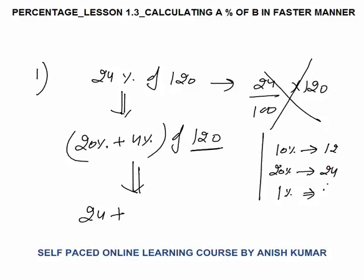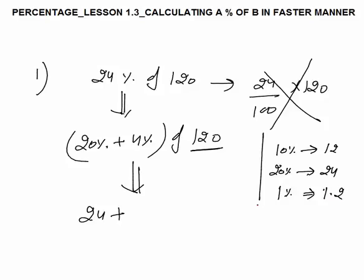So 20 percent of 120 will be double of this, that is 24. Now 1 percent of 120 is 1.2. We need to calculate 4 percent — 4 percent would be 1.2 into 4, which is 4.8. So the answer would be 28.8.